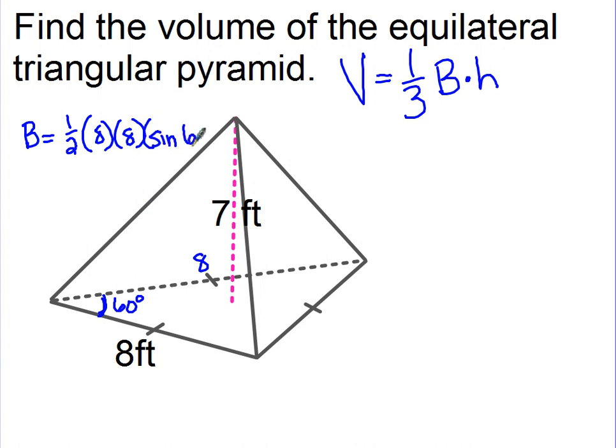So I use the sine of 60 in order to compute the area of my base. So 0.5 times 8 times 8 times the sine of 60. Make sure you're in degree mode. This gives me a base area of 27.7128.